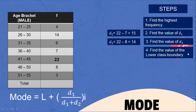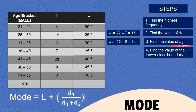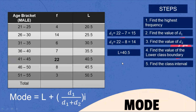Next, find the lower class boundary. The lower class boundary of the highest frequency (22) is 40.5. For the class interval, we count from 41 to 45: 41, 42, 43, 44, 45 — so the class interval I = 5.